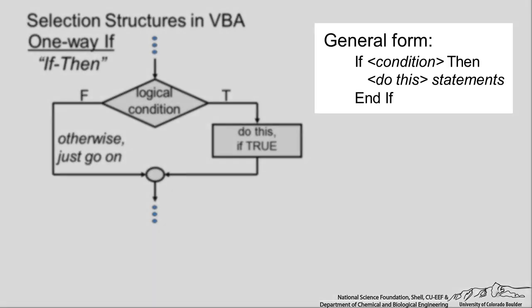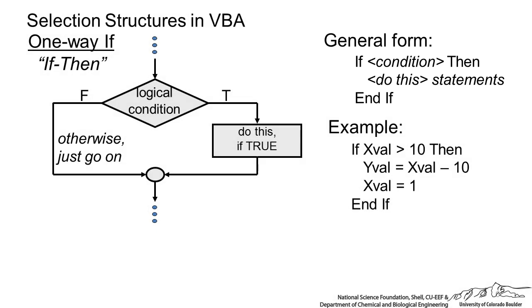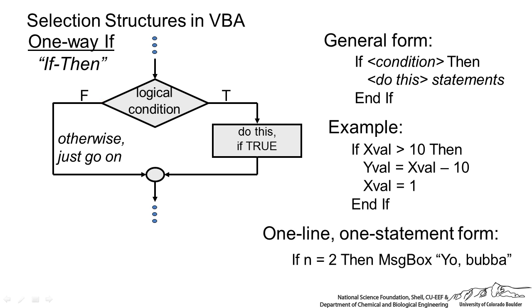The general form of this one-way if in VBA is shown here. An example of this is if XVAL greater than 10, YVAL equals XVAL minus 10, XVAL equals 1. So only if XVAL is greater than 10 do we actually do something. If XVAL is less than 10, we do not do anything. In that case, we would actually be over here on the left. We would just go on. One other thing to note is that we can actually have a one line, one statement form. You will see that this has no end if, so if n equal to, then for example we display a message box, it is all in one line. It is only a one-way if-then, and there is no end if.